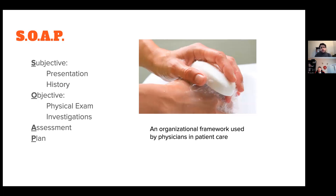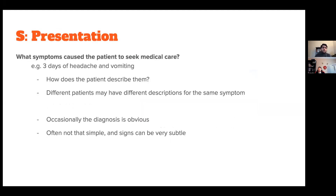An organizational framework physicians use is called SOAP notes — Subjective, Objective, Assessment, and Plan. For subjective, we look at what the patient is presenting with — their history, things the patient describes. For objective, we look at the physical exam, investigations — the signs we see as physicians. We then assess all of this together and come up with a plan, with the patient, to ensure patient autonomy.